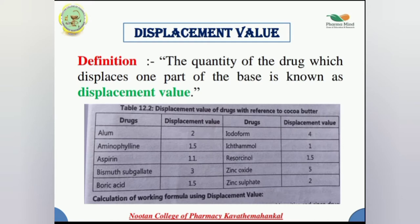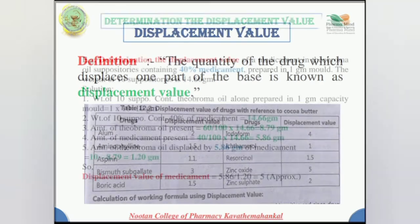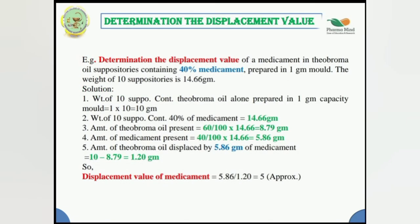The second topic is the calculation of working formula using the displacement value. Common drugs and their displacement values include: alum, aminophylline, aspirin, bismuth subgallate, boric acid, iodoform, paracetamol, resorcinol, zinc oxide, and zinc sulfate. Now, how do we calculate and determine the displacement value of suppositories?